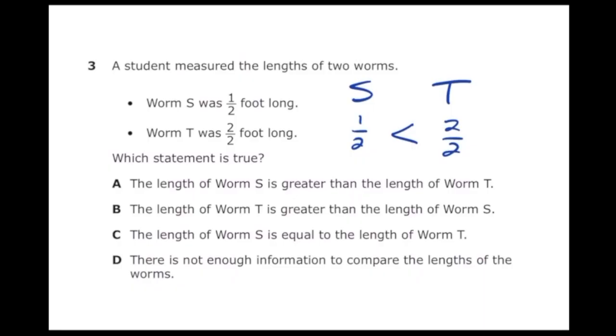Let's go down our answer choices. Letter A says the length of worm S is greater than the length of worm T. That's definitely not true. Letter B: the length of worm T is greater than the length of worm S. Obviously that is true. So letter B is our answer.